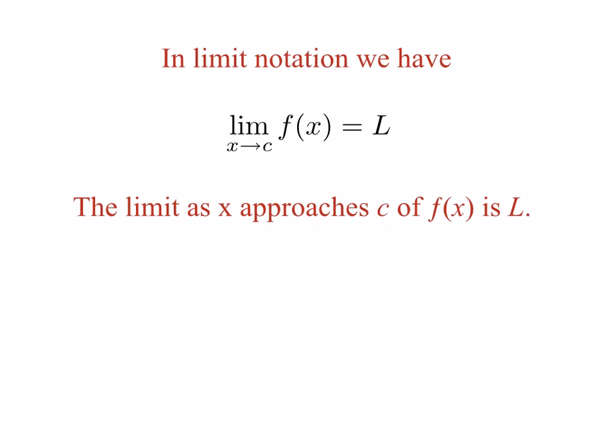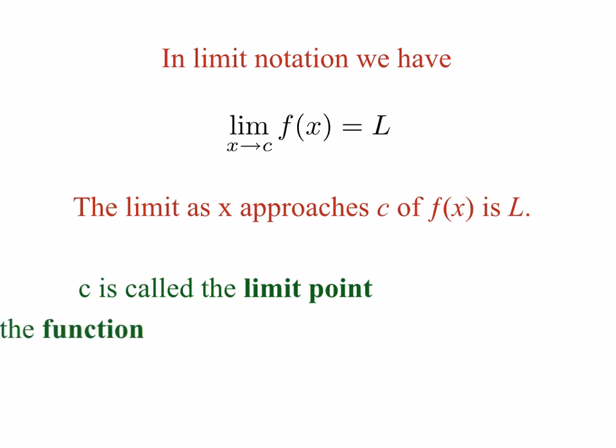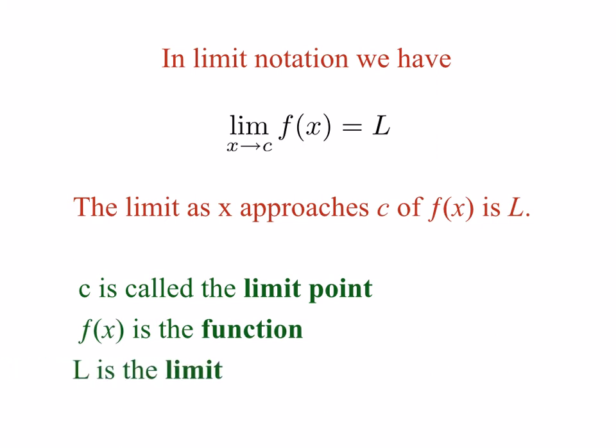Formally we have a notation, and this notation is read: the limit as x approaches c of f of x is equal to l. Let's define these pieces. c is called the limit point, f of x is the function, and l is the limit.